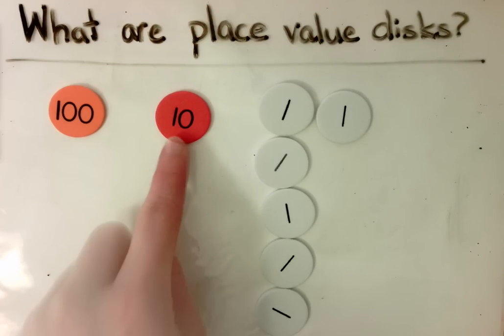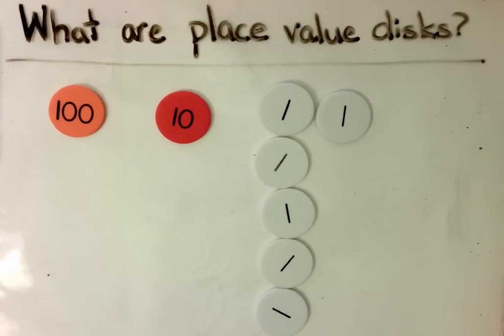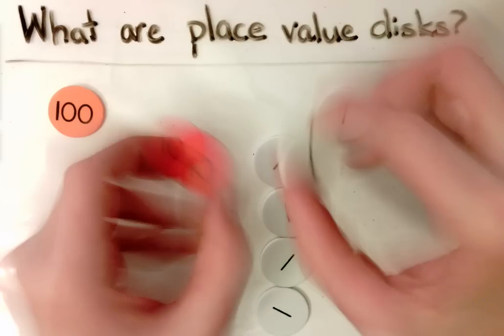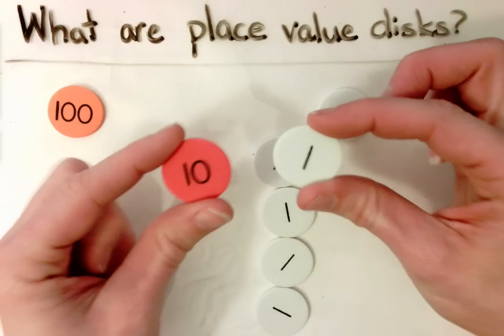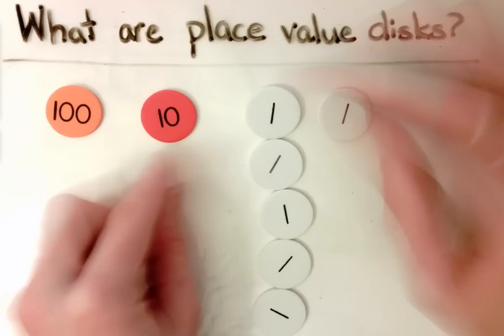It's more abstract than when we use bundles of straws or sticks because the size and shape of the chips is the same but the value of each is different.